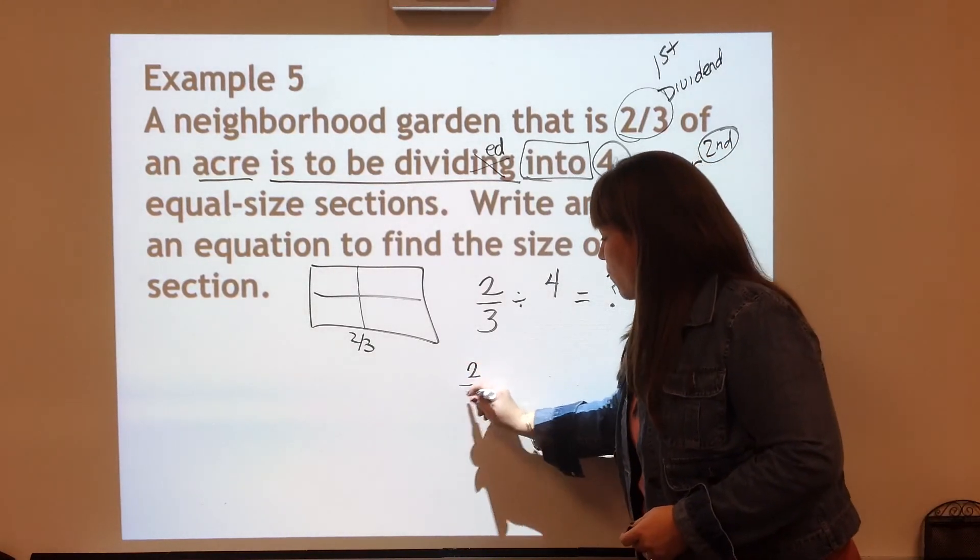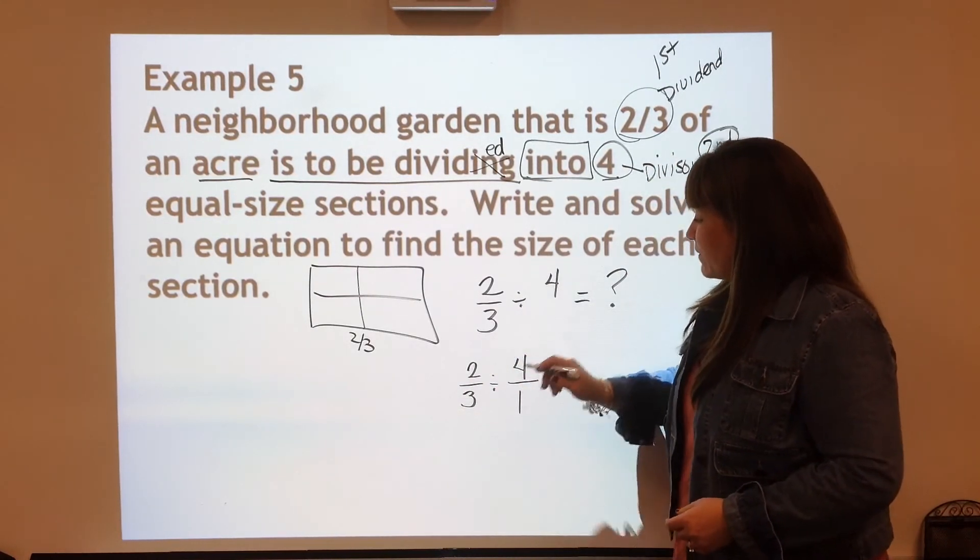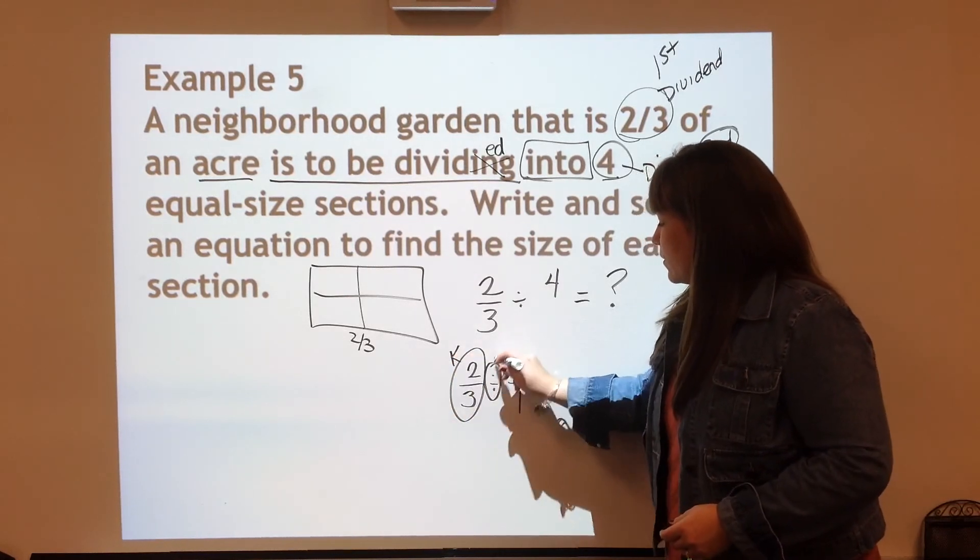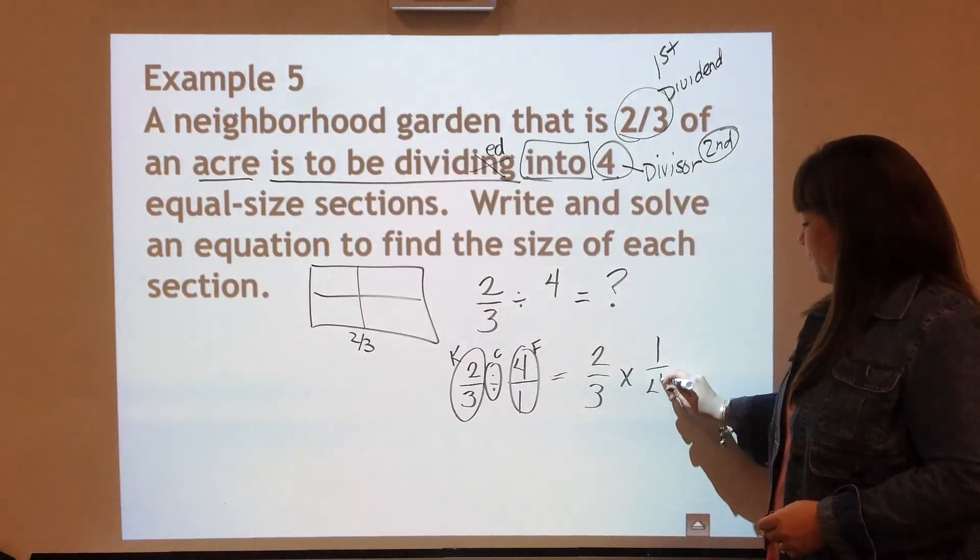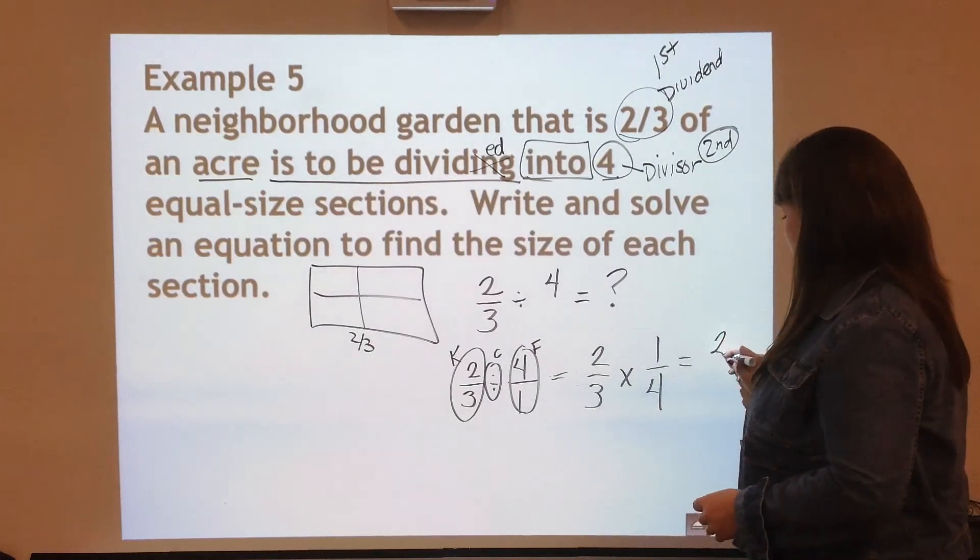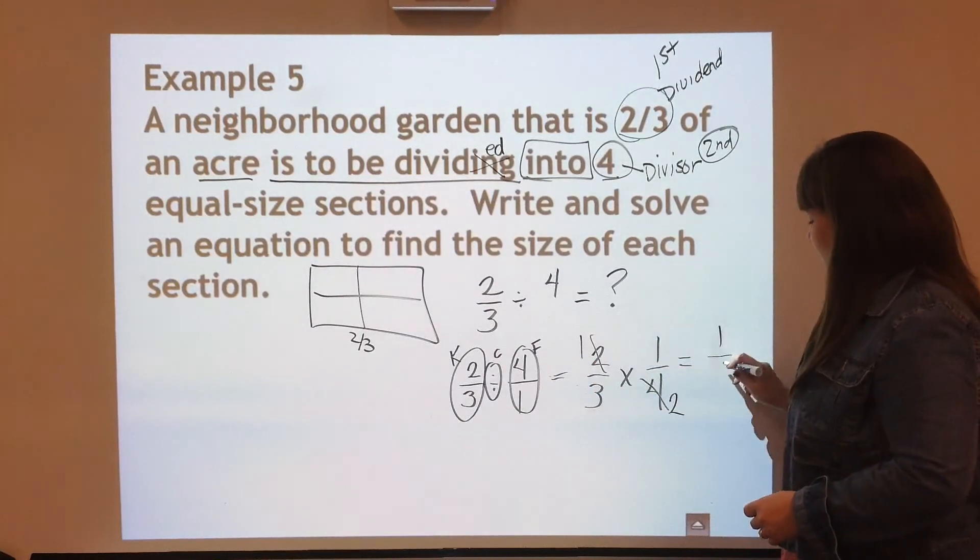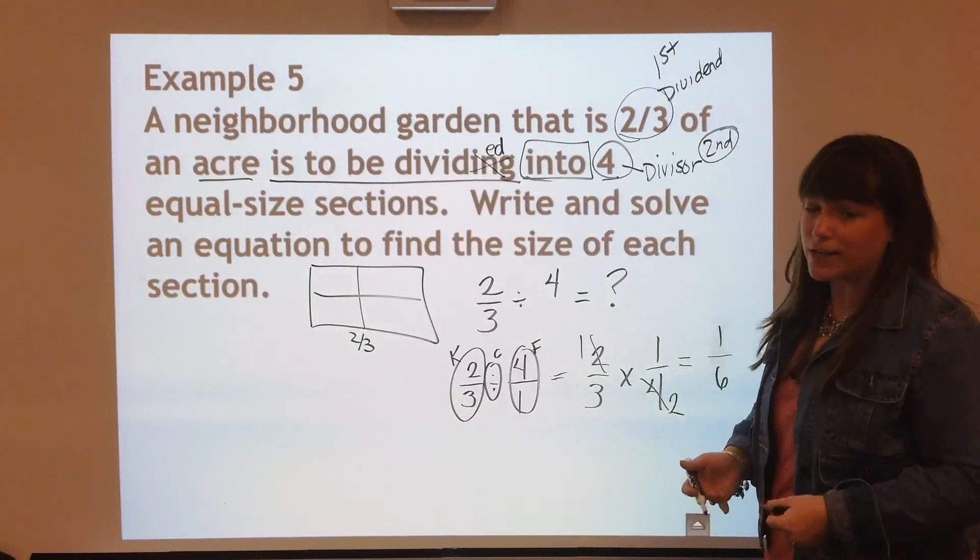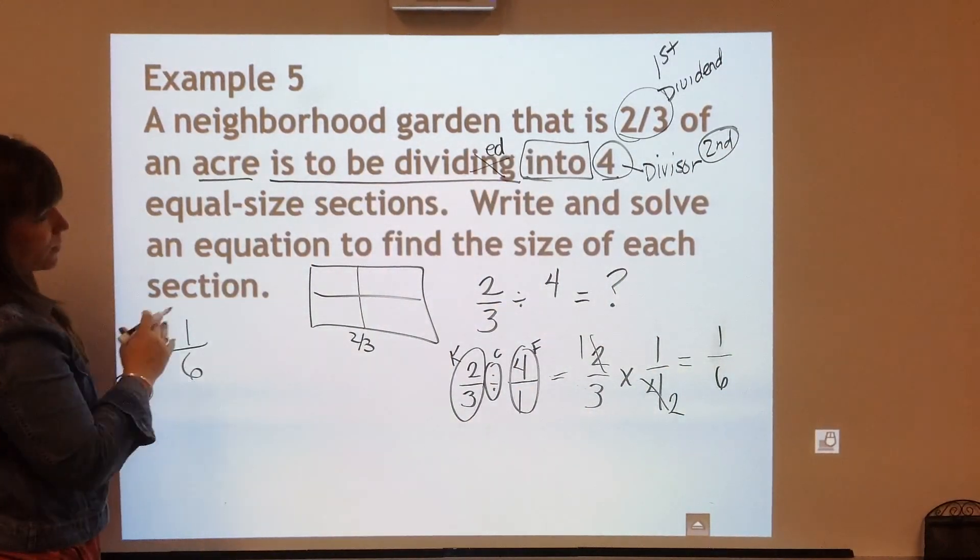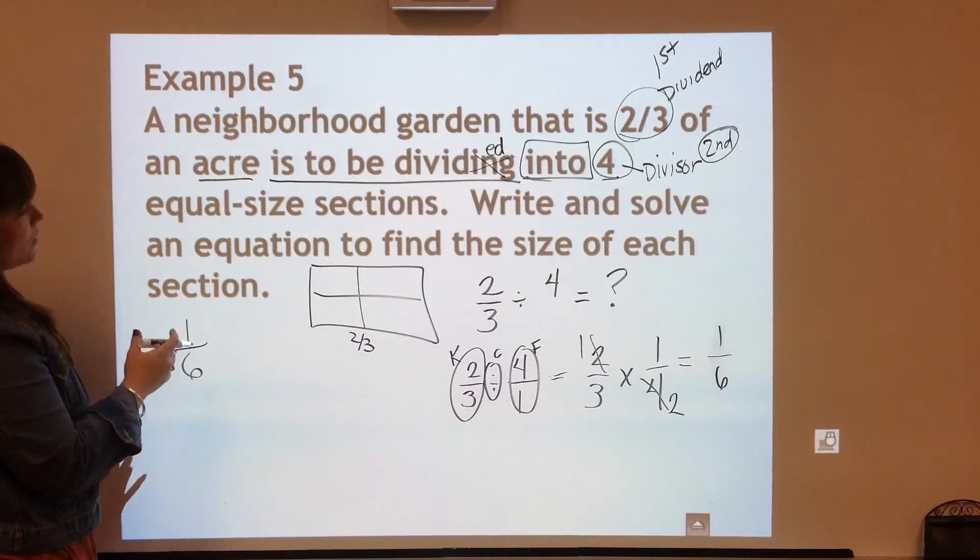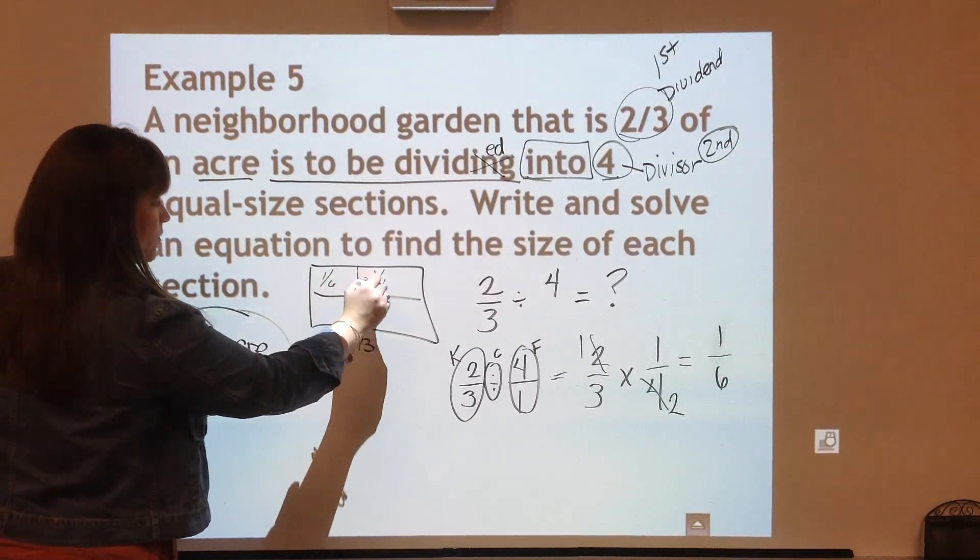Now let's put the four over one. Notice the four, the whole number is the divisor again. Now we have to keep change flip. Keep change flip is going to equal 2/3 times 1/4. There's nothing I can do to simplify this down more. So all I have to do, oh sorry, I can. Two and four can simplify down. There we go. And we have 1/6. If you had done 2/12, you just would have had to divide by two at the end. So our answer to our equation with our topic and our unit written to the right is what? 1/6 acre. That will be each piece.